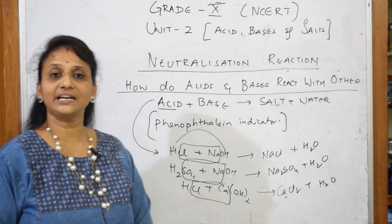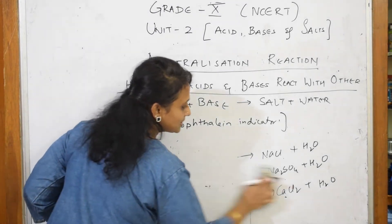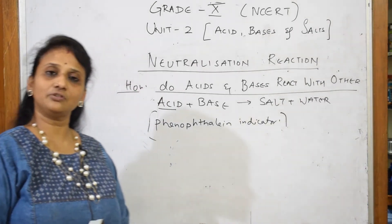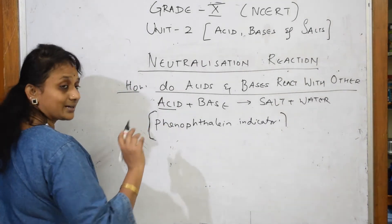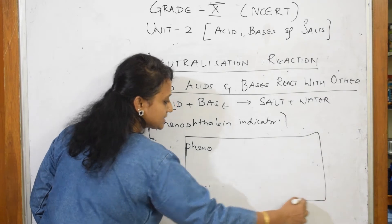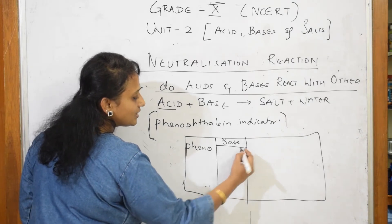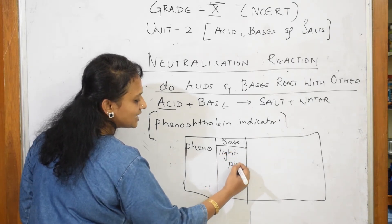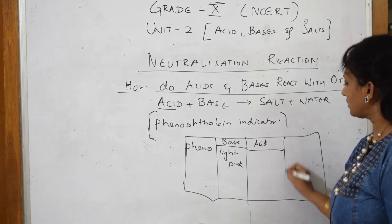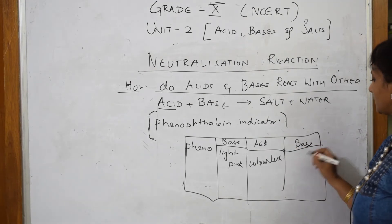Now how will I test this with the phenolphthalein indicator? I get salt plus water. I will show you this activity as an animated video at the end. The trick to remember: when you add phenolphthalein indicator to a base, it will always turn light pink — a nice, beautiful pink color. When you put it in an acid, it will become colorless. Again, when you add base to it, it will become light pink.